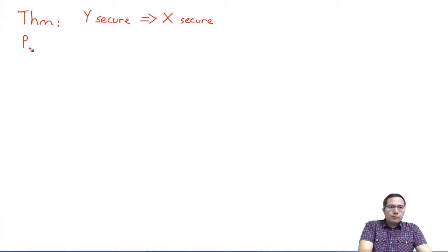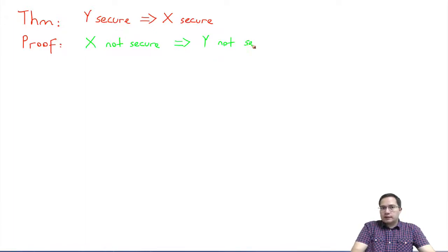The proof methodology will be the same in all reduction proofs. We will prove this using the contrapositive. The contrapositive statement is: if X is not secure, this should imply that Y is not secure.